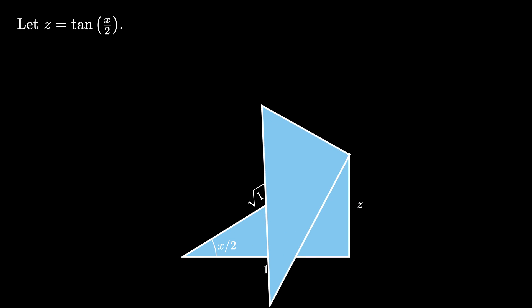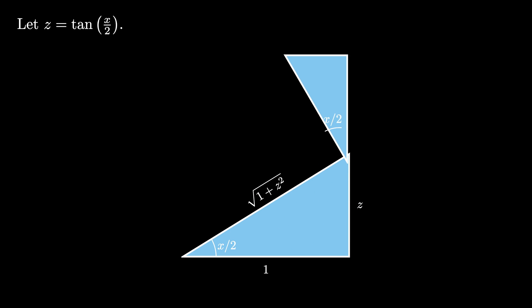We can take a copy of this triangle, scale by the value z, and rotate 90 degrees, then place these two triangles next to each other where the complementary angles meet. This new triangle has side lengths z and z squared and a hypotenuse of length z times the square root of 1 plus z squared.